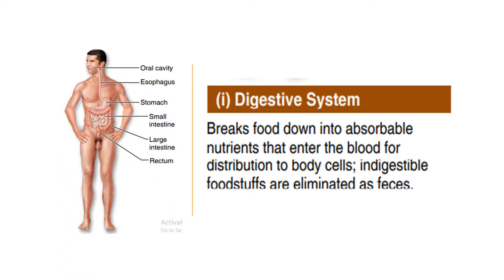Next is the digestive system, which is basically a tube running through the body from mouth to anus. Its organs include the oral cavity, esophagus, stomach, small and large intestine, and rectum, plus accessory organs such as the liver, salivary glands, and pancreas. Their role is to break down food and deliver resulting nutrients to the blood for dispersal to body cells.